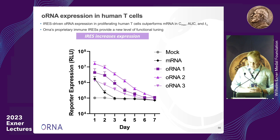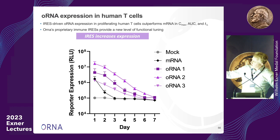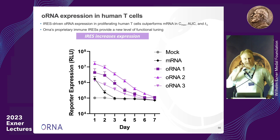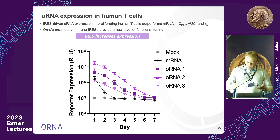Looking at a reporter construct delivered to human T cells in a dish, we compare the amount of protein produced over time for conventional state-of-the-art messenger RNA versus different circles. The circles are shown in purple. The total amount of protein is the area under the curve, and with these circles in T cells, we're getting orders of magnitude more protein over time. That gives us hope that we can deliver important proteins to T cells.